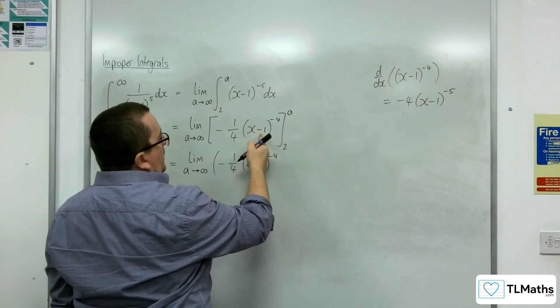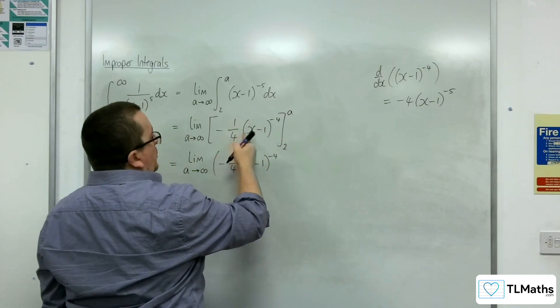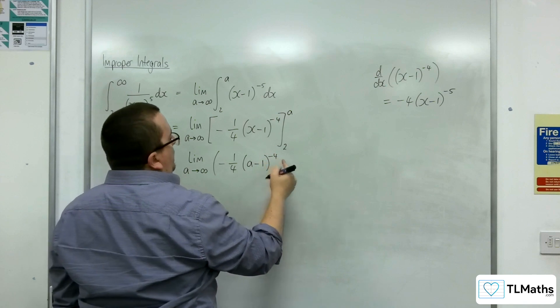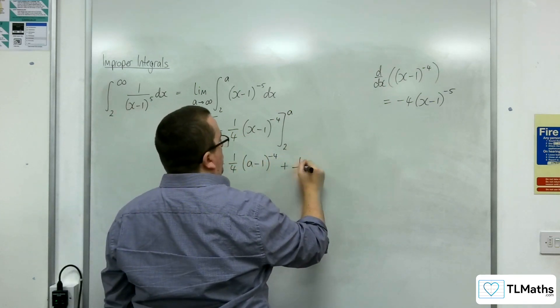So substituting in 2, 2 take away 1 is of course 1, so we have minus 1 quarter times 1, and we're taking this away. So take away minus 1 quarter is plus 1 quarter.